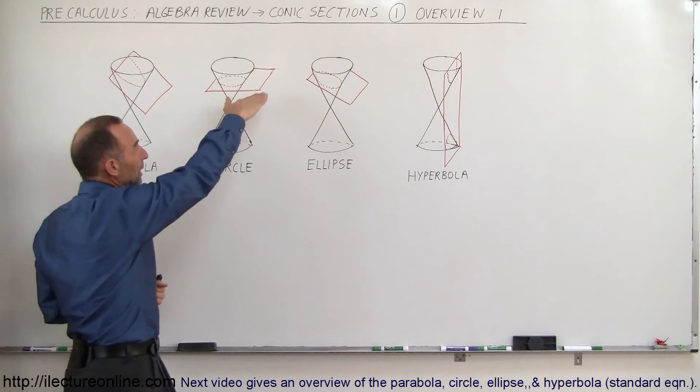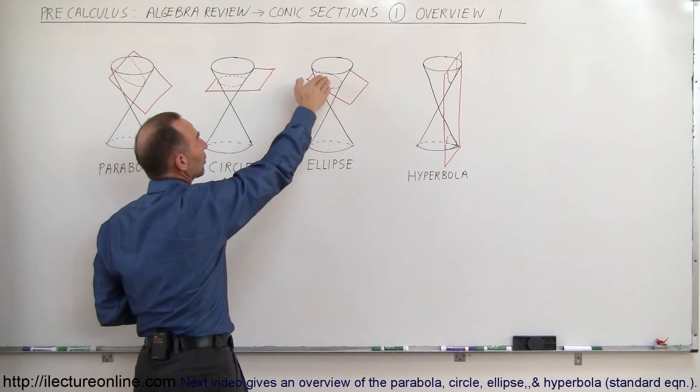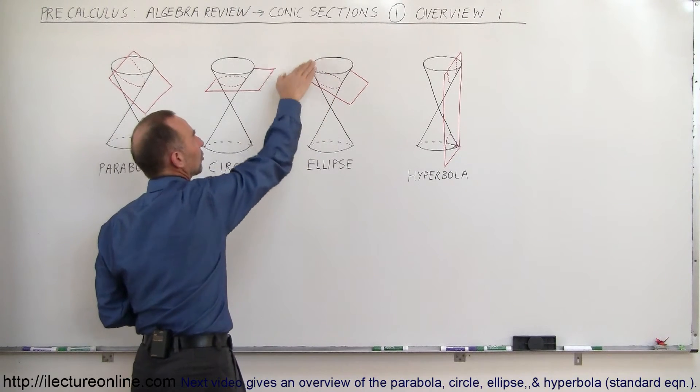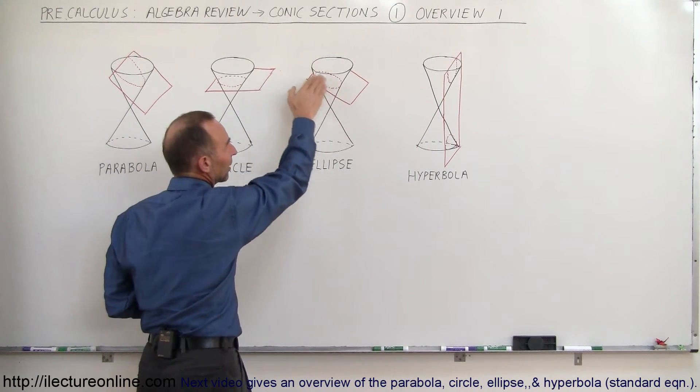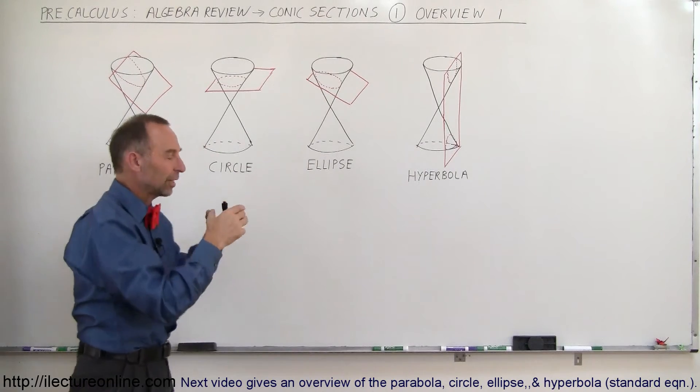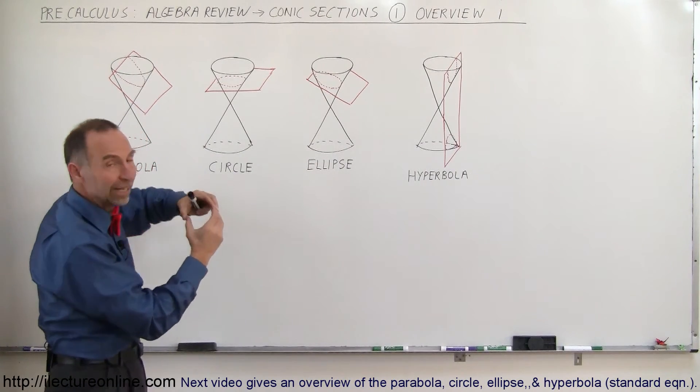If we angle the plane, but not far enough where the sheet comes out of the cone at the top, where it cuts through the left and right side of the cone, then we have a circle that's stretched into an ellipse.